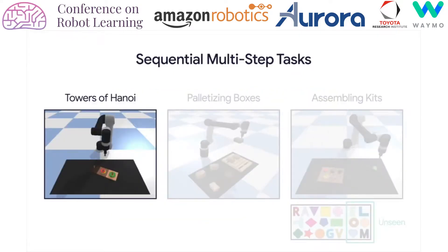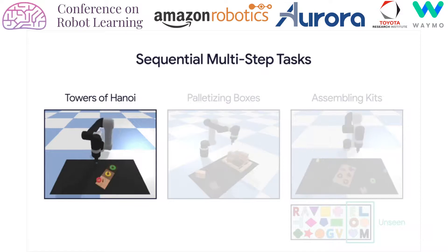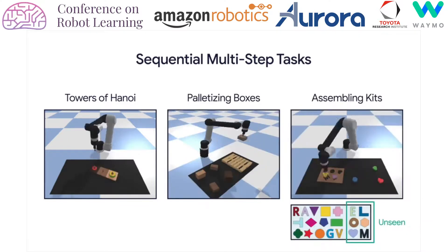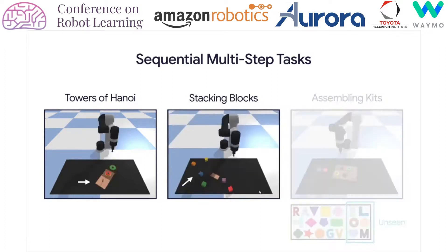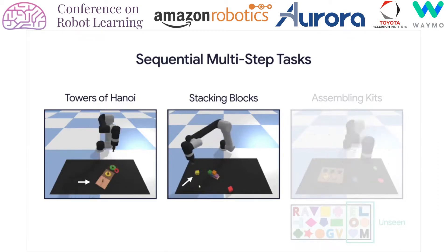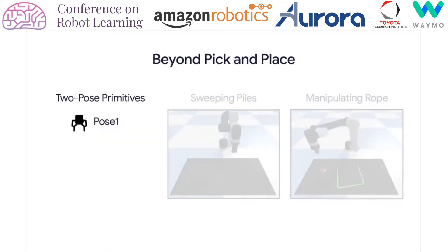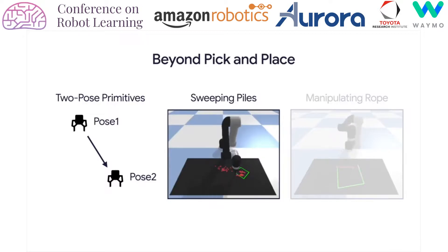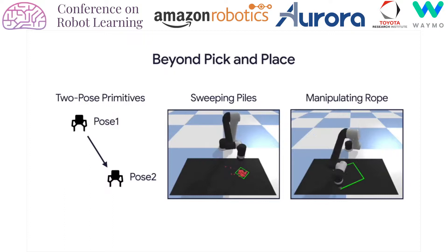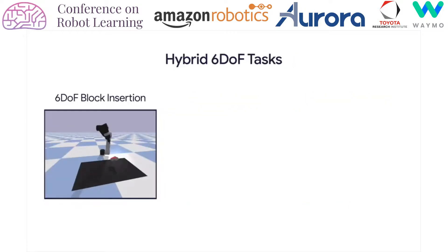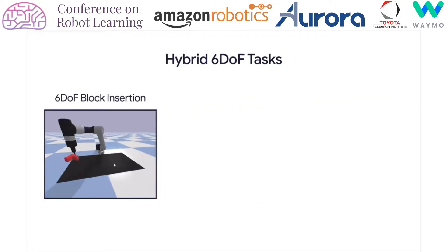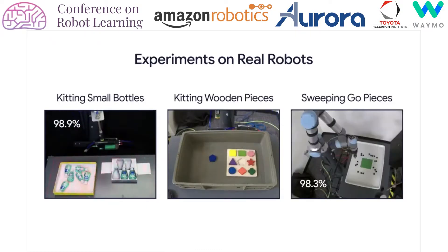Even though transporter nets are stateless models, they have the capacity to learn multi-step sequential tasks using closed-loop visual feedback, such as moving discs for towers of Hanoi, palletizing boxes, or assembling kits of new objects not seen during training. Policies tend to learn emergent recovery behaviors due to baked-in invariances. It can also learn tasks that use any motion primitive defined by two end-effector poses, such as pushing piles of small objects into a target set or reconfiguring a deformable rope to connect the two endpoints of a three-sided square. We also show that it extends to six-degree-of-freedom tasks and validate our results with experiments on real robots.